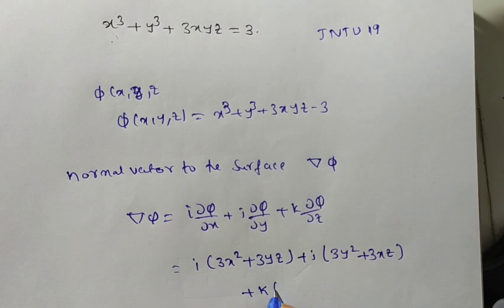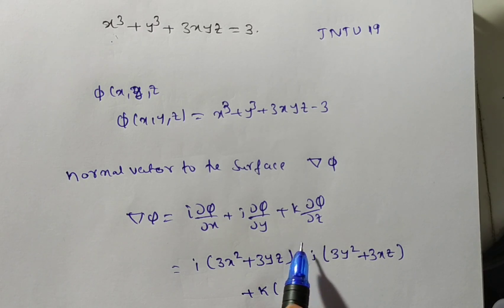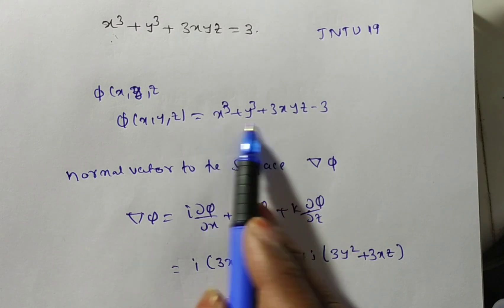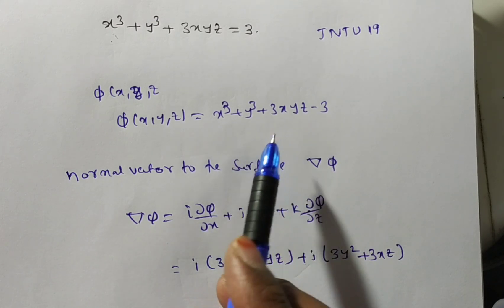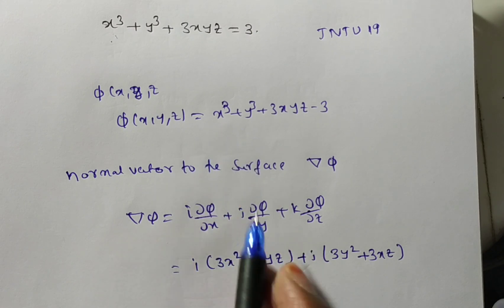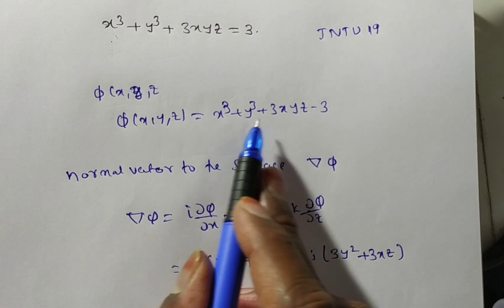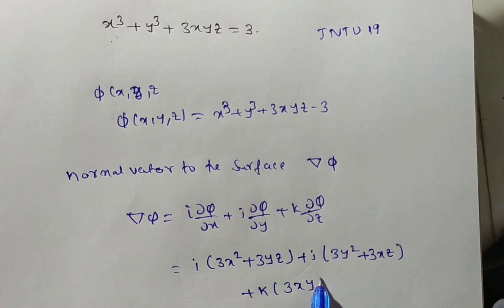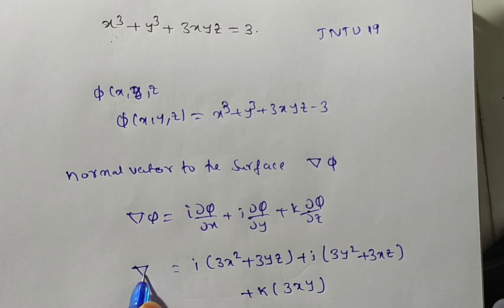For the k component, differentiate with respect to z: x³ does not contain z, so it is 0. y³ also has no z term, so it is 0. Here we have 3xy, and the derivative of z with respect to z is 1, so ∂φ/∂z = 3xy. This gives us the normal vector to the surface.